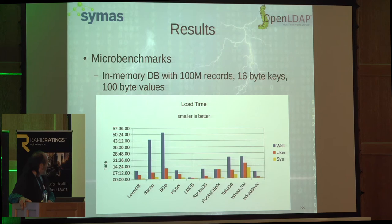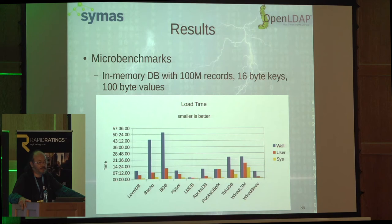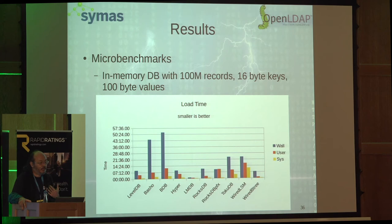Here's a comparison of different databases using 100 million records, 16-byte keys, and 100-byte values. This graph shows the time it takes to load that much data in sequential order, which is the best case. Berkeley DB is taking the most time. For the OpenLDAP project, the switch from Berkeley to LMDB was a huge win just for sysadmin throughput.